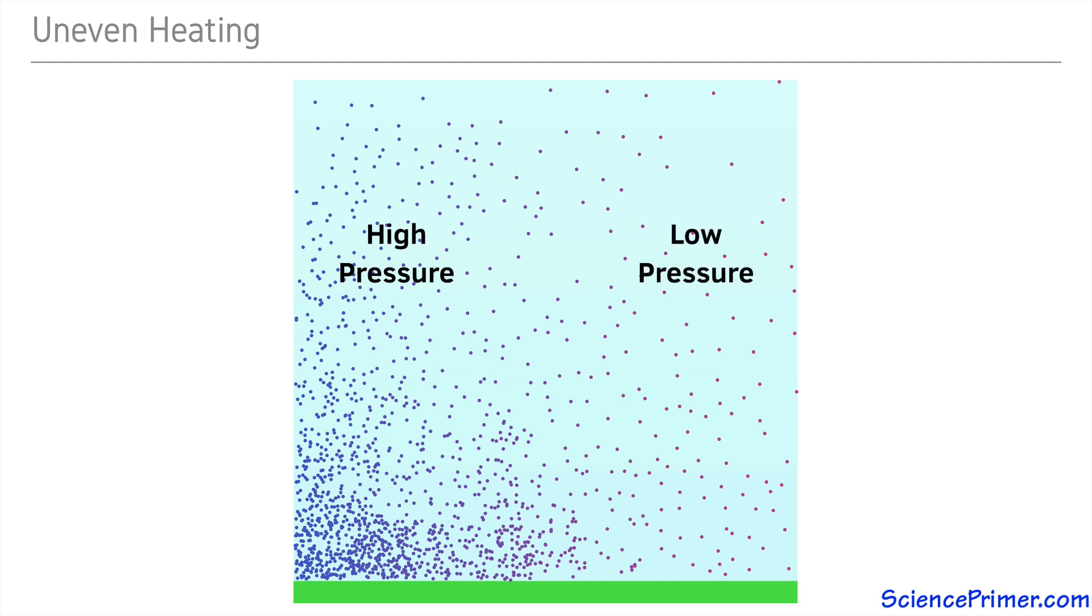These pressure differentials cause air to move along the ground from regions of high pressure to regions of lower pressure. We experience these air currents as wind. The force driving the currents caused by differences in pressure between two regions is called pressure gradient force.